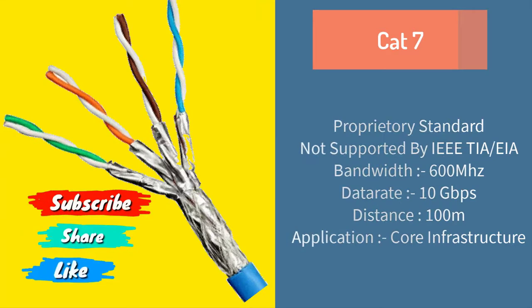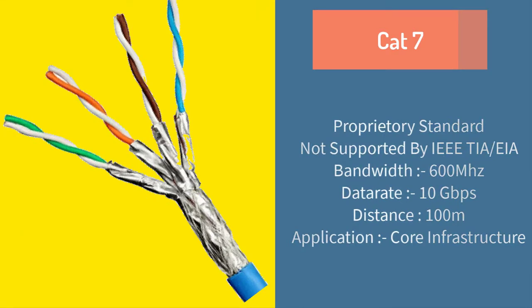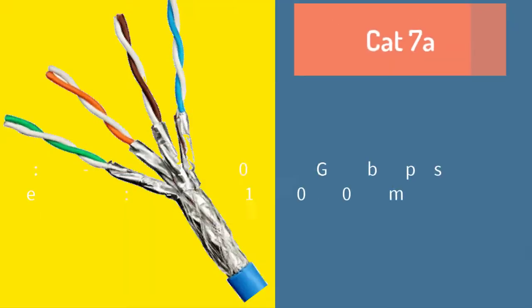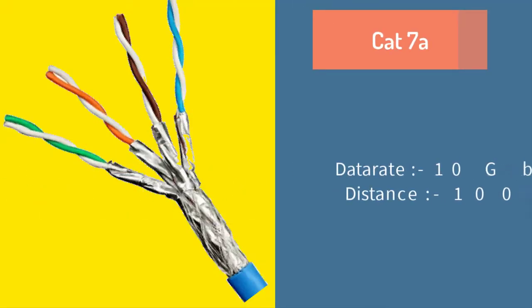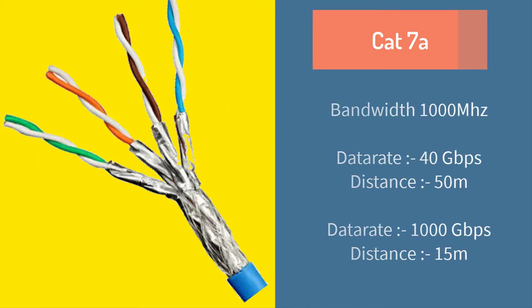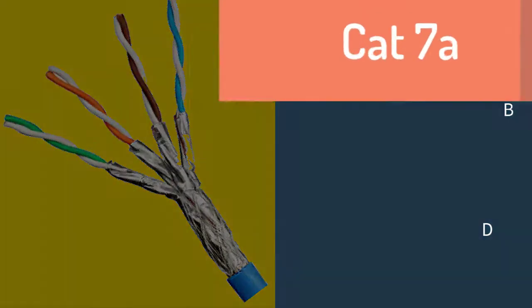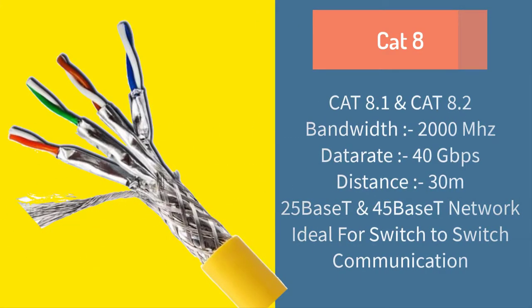Cat7 cable is a proprietary standard not supported by IEEE and TIA/EIA. It supports 600 MHz bandwidth and 10 Gbps data rate up to 100 meters, and is mainly used in core infrastructure. Cat7a supports 10 Gbps up to 100 meters, and with 1000 MHz bandwidth can achieve 40 Gbps up to 50 meters and 100 Gbps up to 15 meters. Cat8 supports bandwidth up to 2000 MHz and 40 Gbps data rate over 30 meters, ideal for core infrastructure with 25GbE or 40GbE network switch-to-switch communication.